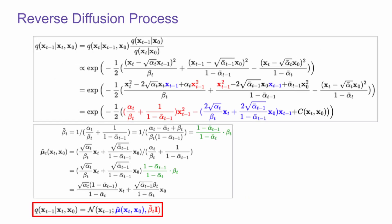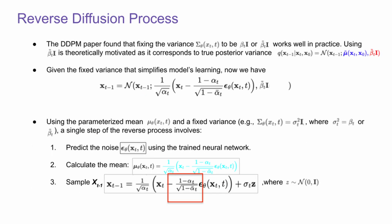Now with a lot of mathematics we finally have the reverse process. First we predict the noise. Note that this is the whole noise for xt using the trained neural network. And then we calculate the mean and then we sample xt-1.